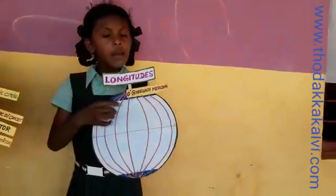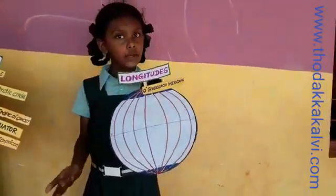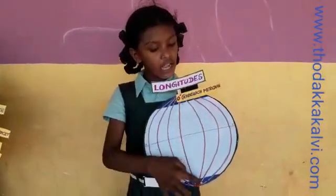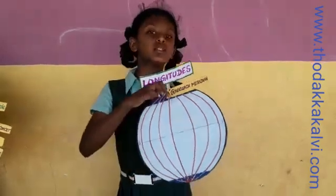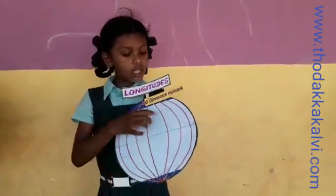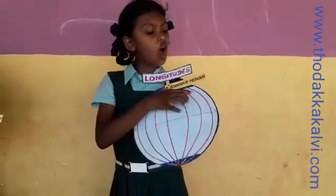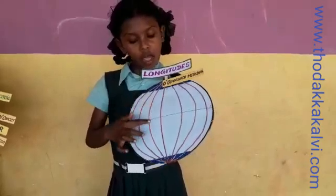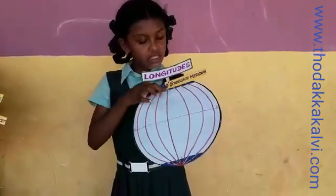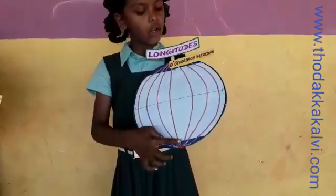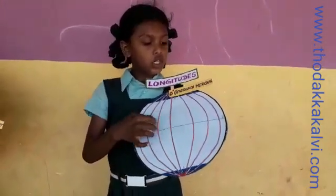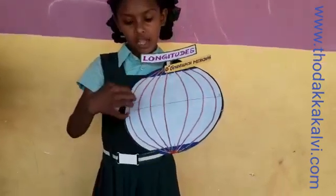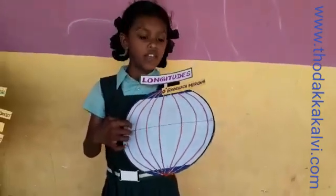Longitudes. Besides latitudes, they are circular lines running to the north pole and the south pole. These lines are called longitudes or meridians. The central longitude divides the earth into the eastern hemisphere and the western hemisphere.